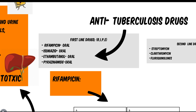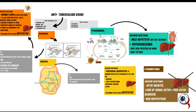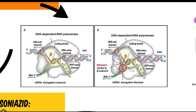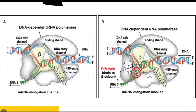Let's jump directly into rifampicin. We've colour-coded rifampicin as orange, and I'll later tell you why. Rifampicin's mechanism of action is it binds the beta subunit of DNA-independent RNA polymerase. By doing this it blocks the conversion of RNA into DNA, so RNA cannot be converted to DNA in the bacterial cell.